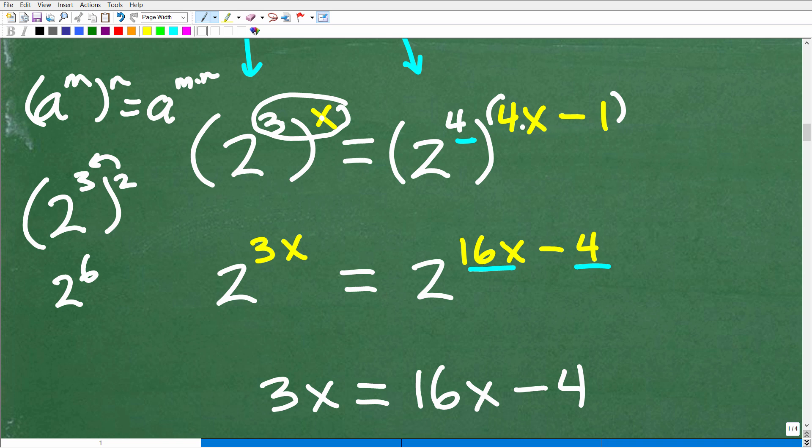But again, if we do this correctly, we're going to have 4 times 4x is 16x, and then this 4 times this one is 4. Okay, so what do we have now, right? Well, the key to unlocking this equation, solving this exponential equation, is if we can get the bases the same.